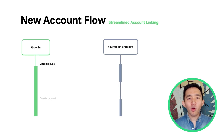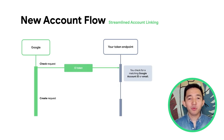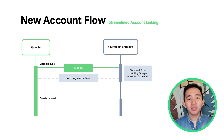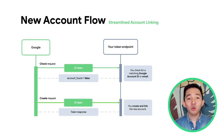What if you don't already have an account? After sending the check intent request as before, you'll return account found as false since you did not find a matching Google account ID or email. Now, instead of a get intent request, Google will send a create intent request along with the ID token. After you create the new account, you'll link it with the Google account and return the access and refresh tokens.